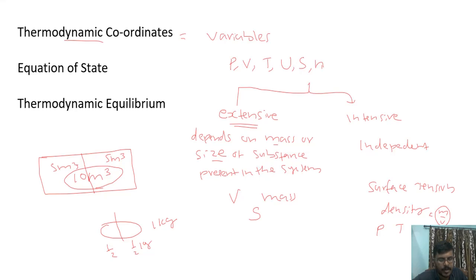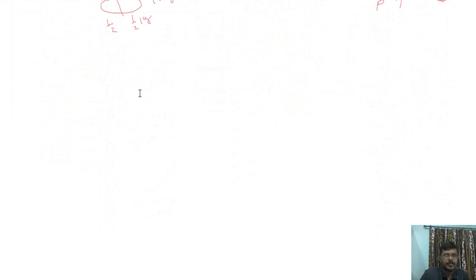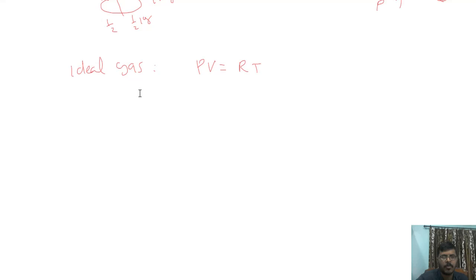The next point is equation of state of the system. For an ideal gas, the equation of state is the ideal gas law: PV = RT, when the number of moles of the gas is 1. The equation of state is the relation connecting different thermodynamic variables of the system.